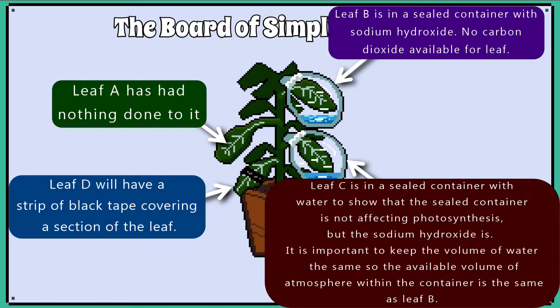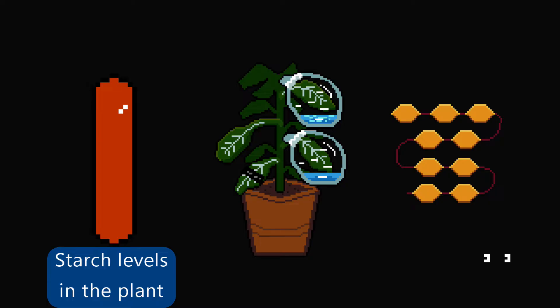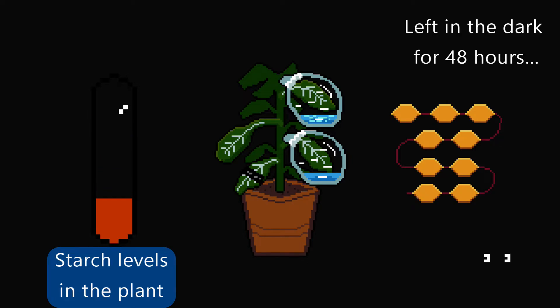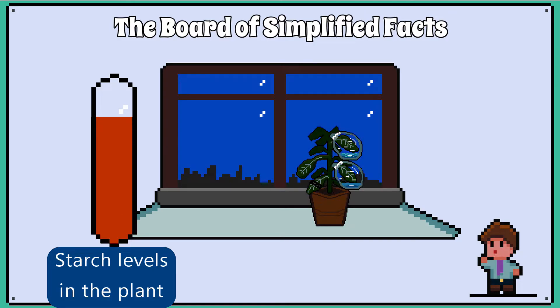Leaf D will have a strip of black tape covering a section of the leaf. It is important that before we start letting the plant photosynthesise, we need to be sure that the plant has no stored starch from any previous photosynthetic activity. So, we place the plant in a dark cupboard with no available light, so the plant uses up all its starch reserves. We call this de-starching the plant. We place the de-starched plant under a light source, so any starch being made now is new, and each leaf will now be photosynthesising under their new respective conditions. After some time has passed, we can now test each leaf for the presence of starch.